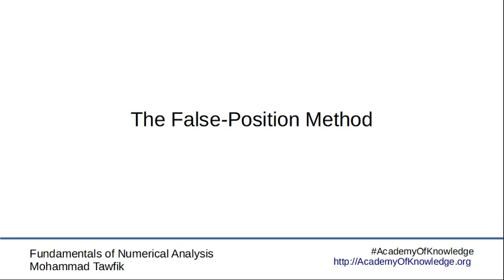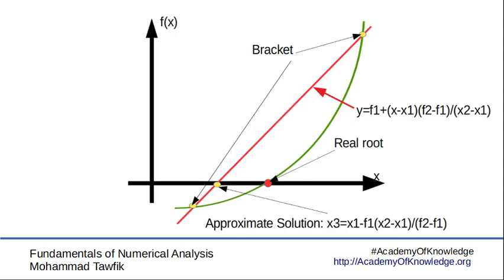The false position method is also a very simple one, but it needs a little bit more mathematics than the bisection method because it introduces a very simple new concept, which is if the bracket is lying between x1 and x2, the ones that we know, then instead of just splitting it into two, we draw a line joining those two points.